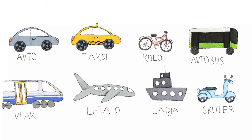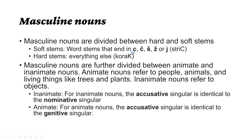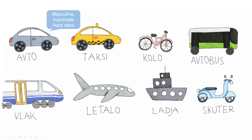Next, we have the word avto. Avto has the ending -o which might make you think that it's neuter. However, avto is a masculine word. Avto also has a hard stem because it ends with o. Remember, soft stems end with c, š, č, ž, and j. Hard stems end with anything else. And of course, avto — car — is an inanimate object because it isn't alive. We have to keep this in mind for masculine words.